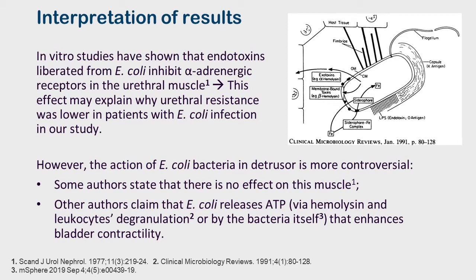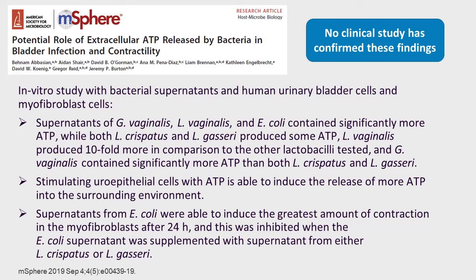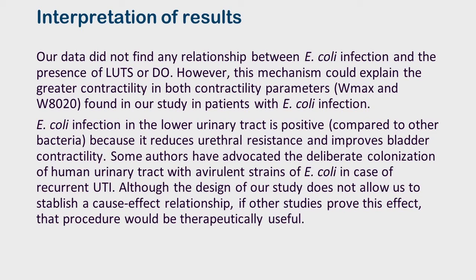However, the action of E. coli on the detrusor is more controversial. Some authors state that there is no effect on this muscle. On the other hand, some studies claim that E. coli releases ATP that enhances bladder contractility. A recent in vitro study suggests that the urinary microbiota regulates ATP levels. Stimulation of uroepithelial cells with ATP induces the release of more ATP into the surrounding environment, stimulating the contraction of myofibroblasts. This effect can be inhibited with the addition of Lactobacillus crispatus and gasseri. However, no clinical study has confirmed these results.